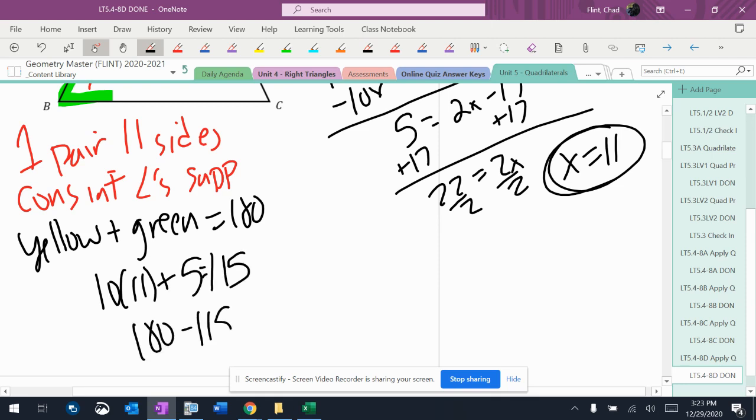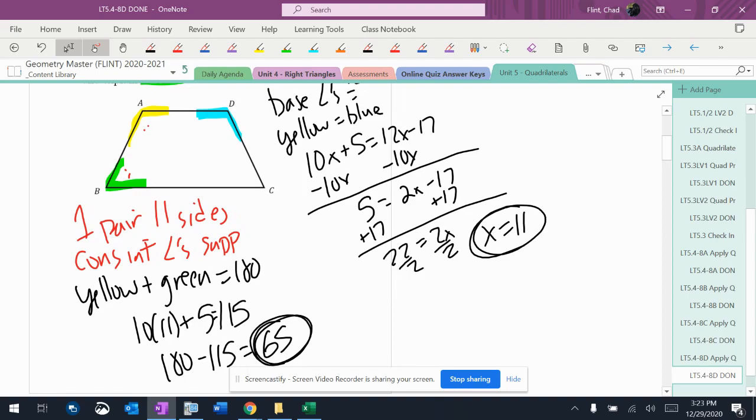And I'll see what's left over from 180, which gives me 65. So my green angle is 65.